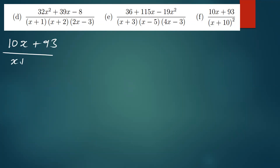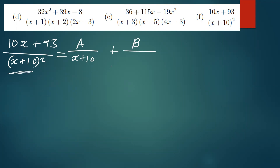We have x plus 10 as the repeating factor. When you have repeating factors, the first term is A over the same factor — x plus 10 — and the second term is B over that same factor, but with the power increased by one. So the power goes from one to two, giving us x plus 10 squared.